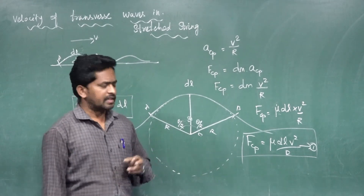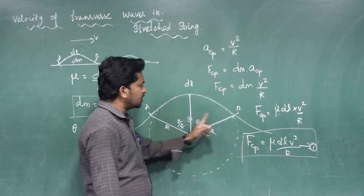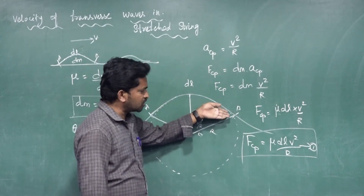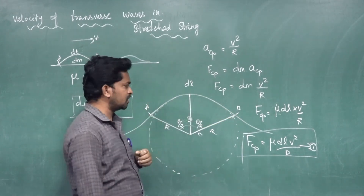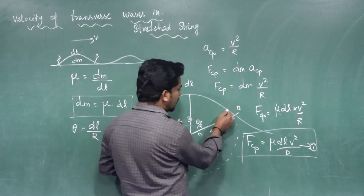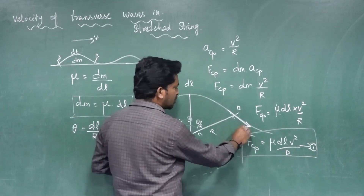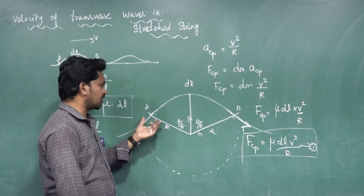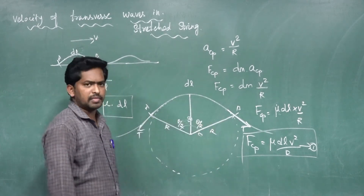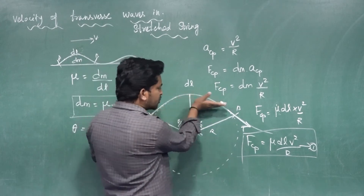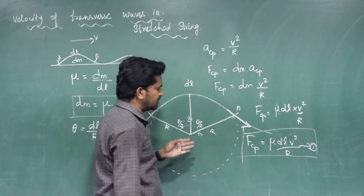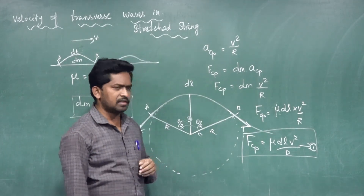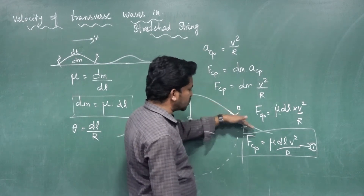The tension force acts at points A and B of the arc. The same tension force acts on both points A and B. The pulse acts in the tangent direction, and the resultant of tension is tangent to the pulse. The tension force is divided into two components: the horizontal force component and the vertical force component.